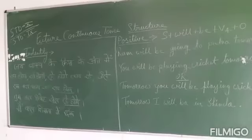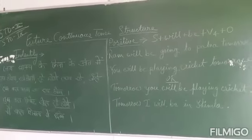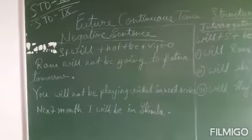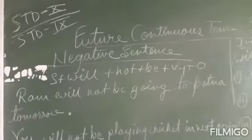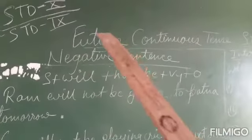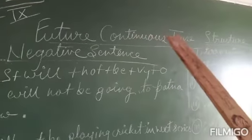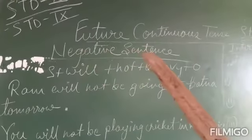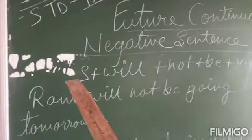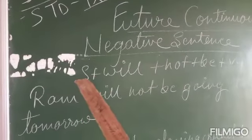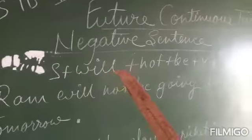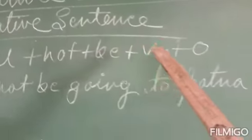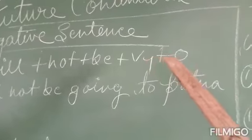Now we will see negative structure and interrogative structure. The structure of a negative sentence in future continuous tense is: subject plus will plus not plus be plus V4 plus object.